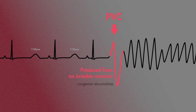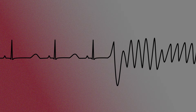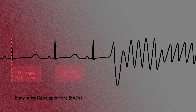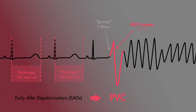Such causes include congenital abnormalities, medication-induced QT prolongation, and electrolyte disorders. In these cases, the prolonged time to repolarization — represented as a long QT interval — can lead to early after depolarizations, or EADs. And if the EADs within a cardiac myocyte are large enough, they can propagate further ventricular depolarization, which can then trigger a PVC. When a PVC occurs at approximately the same time as a T wave, this can trigger the polymorphic ventricular tachycardia seen in torsades.